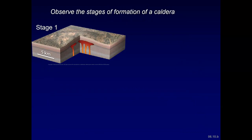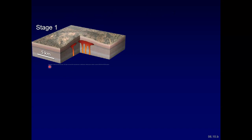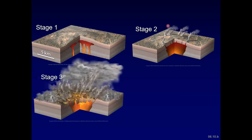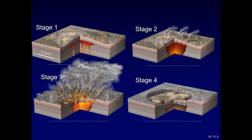Here are the idealized stages of caldera formation. Stage 1: felsic magma accumulates in magma chambers. Stage 2: magma reaches the surface and erupts; the roof of the magma chamber subsides as it is evacuated and circular fractures form. Stage 3: eruption of felsic magma forms eruption columns and pyroclastic flows, much of which falls back into the caldera, along with landslides off the steep walls and tephra covering surrounding areas. Stage 4: magma may rise through fractures along the edge and interior, forming domes.